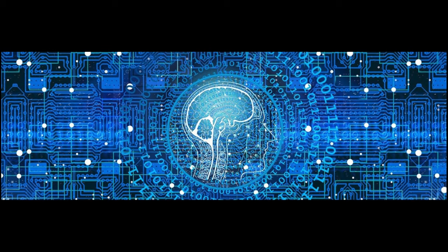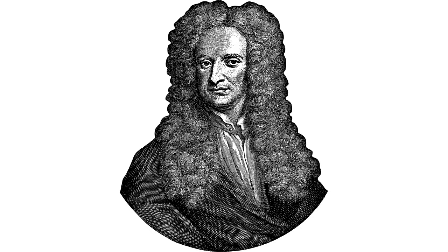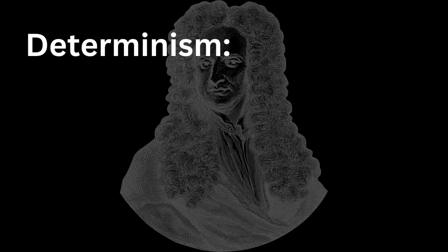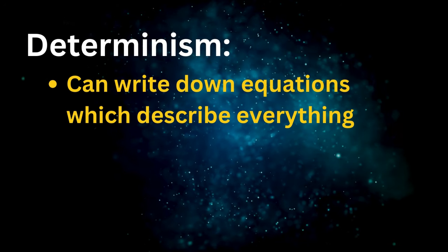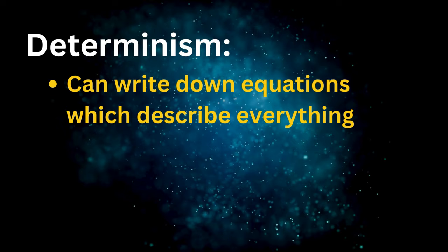It really dates back to the ideas of Isaac Newton in the 17th century. According to Newtonian determinism, if the precise locations of all the components of a system are known, and we know all the physical laws which apply to them, then it's possible to predict as far into the future as we would like via mathematics.